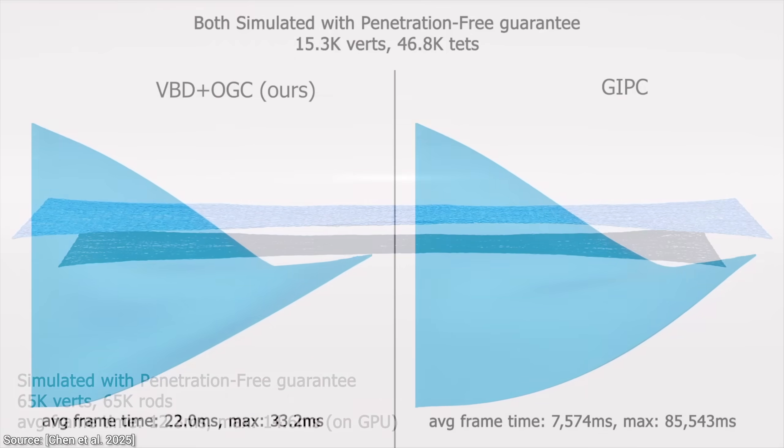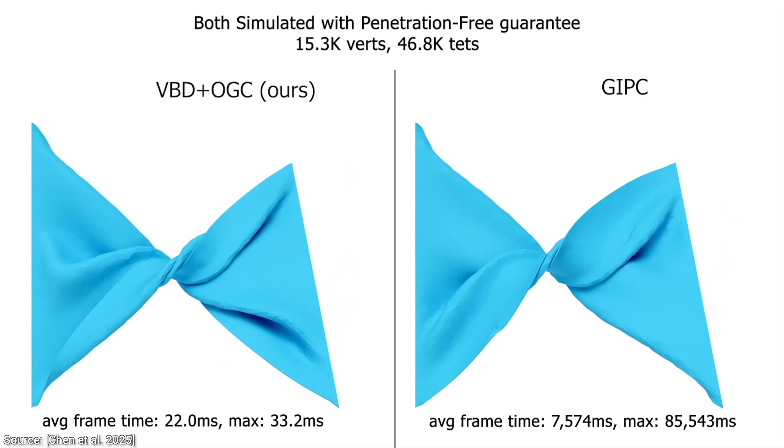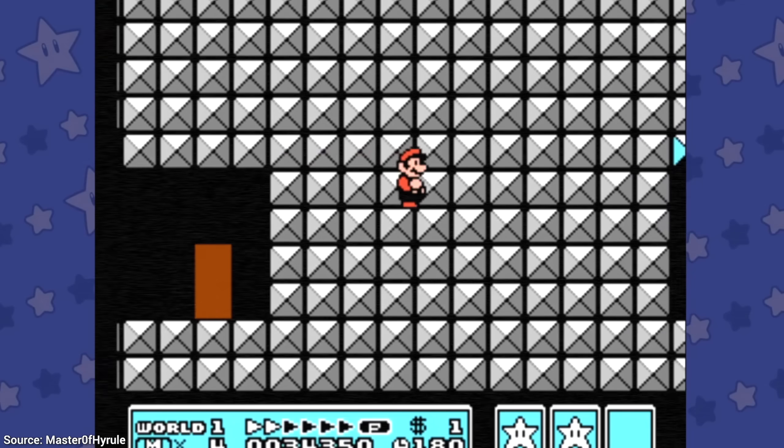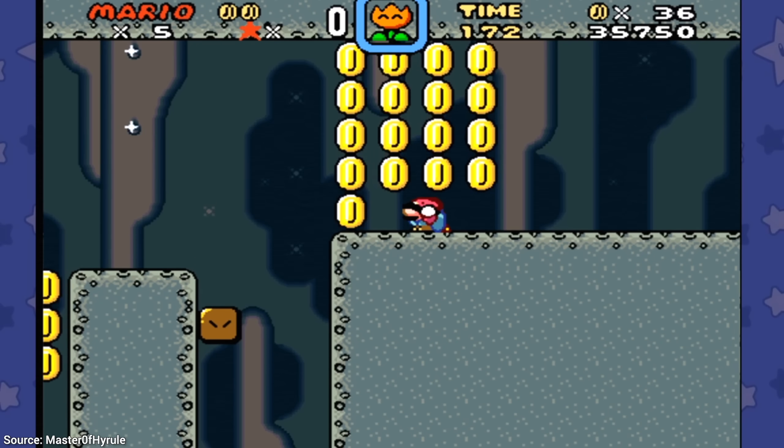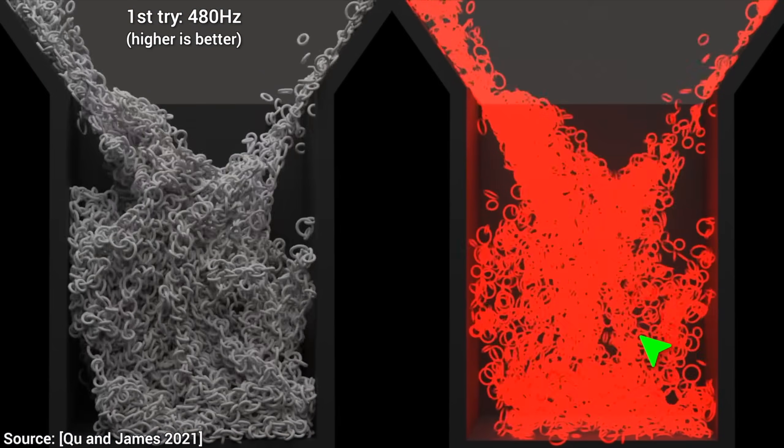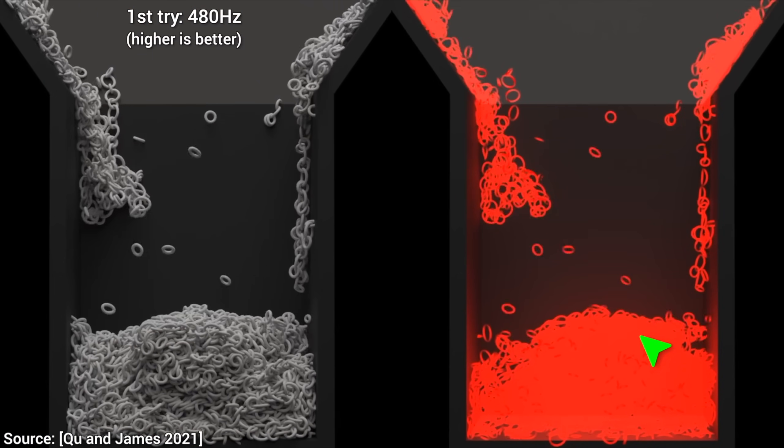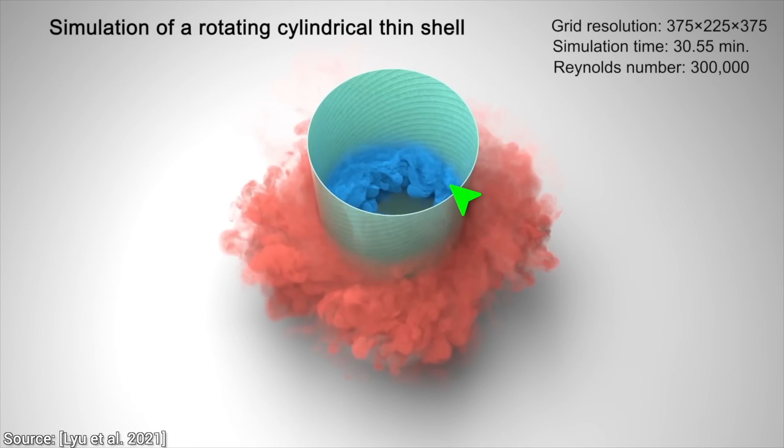So what does penetration-free simulation actually mean? Well, imagine you're playing a video game and your character's hand goes right through a closed door. That is called penetration. And it instantly breaks the illusion. Not acceptable. We want our virtual objects to act like real-world objects. If you push your hand against a table, it stops. You don't phase through it like a ghost. I hope. If it does, I have some bad news for you.